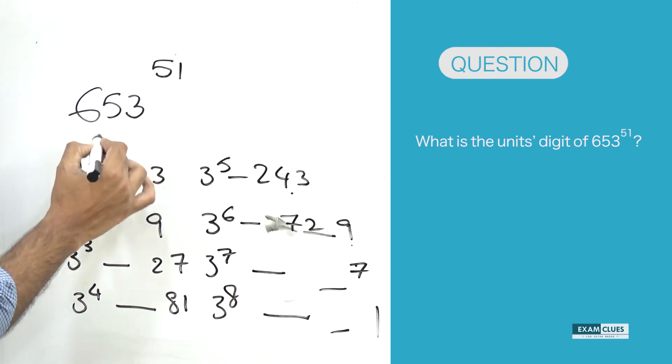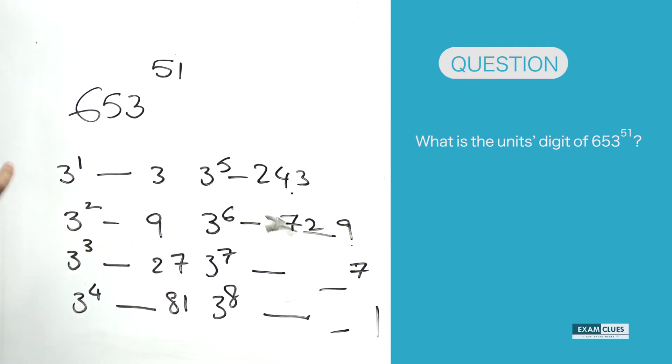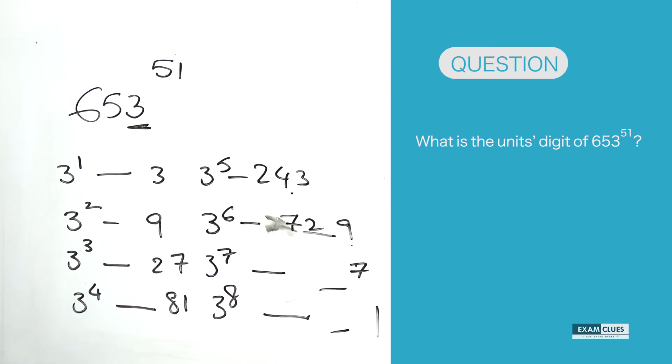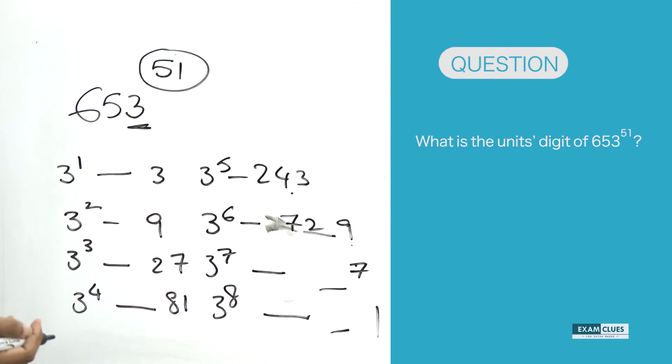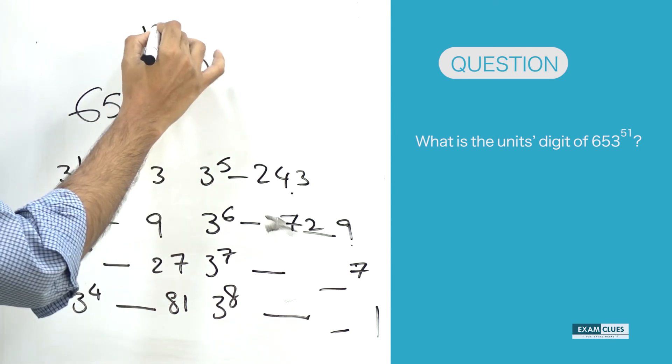So what we need to find now is what is the last digit for 653^51. Here our concern should be only about the last digit 3. You already know that 3 has a cycle of 4. How many 4 cycles are getting finished within 51? That means simply divide it by 4.